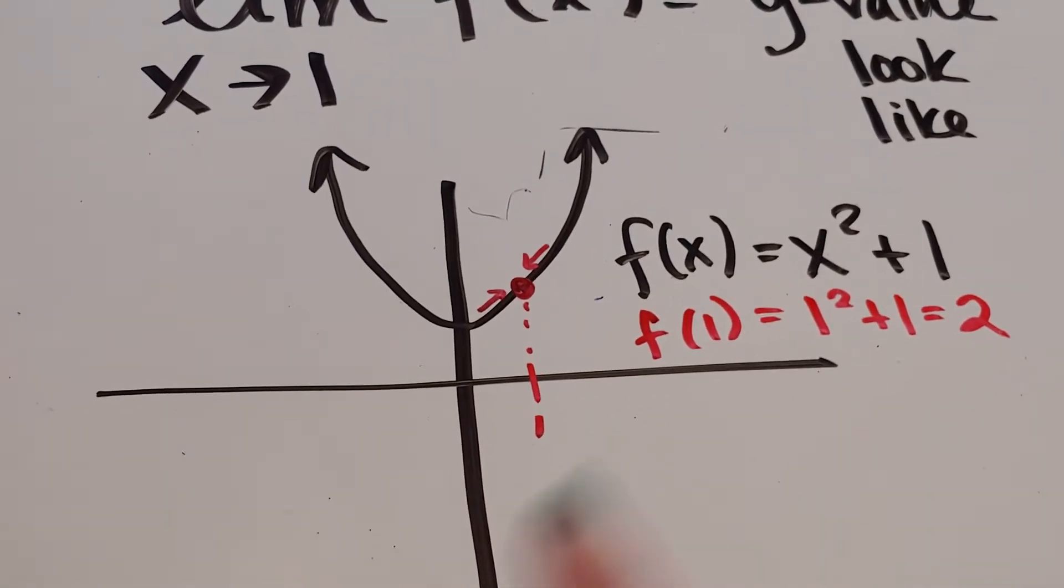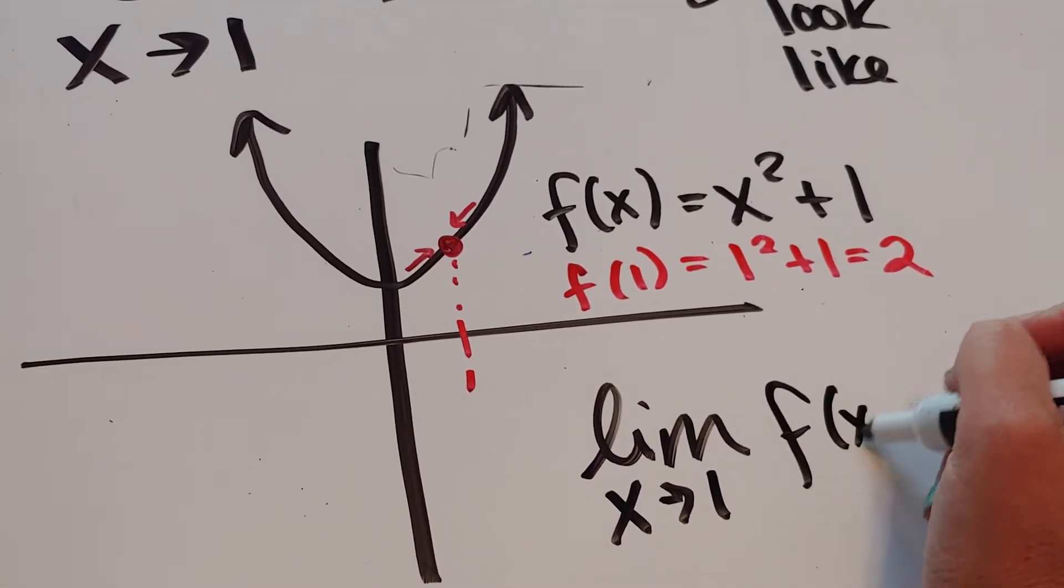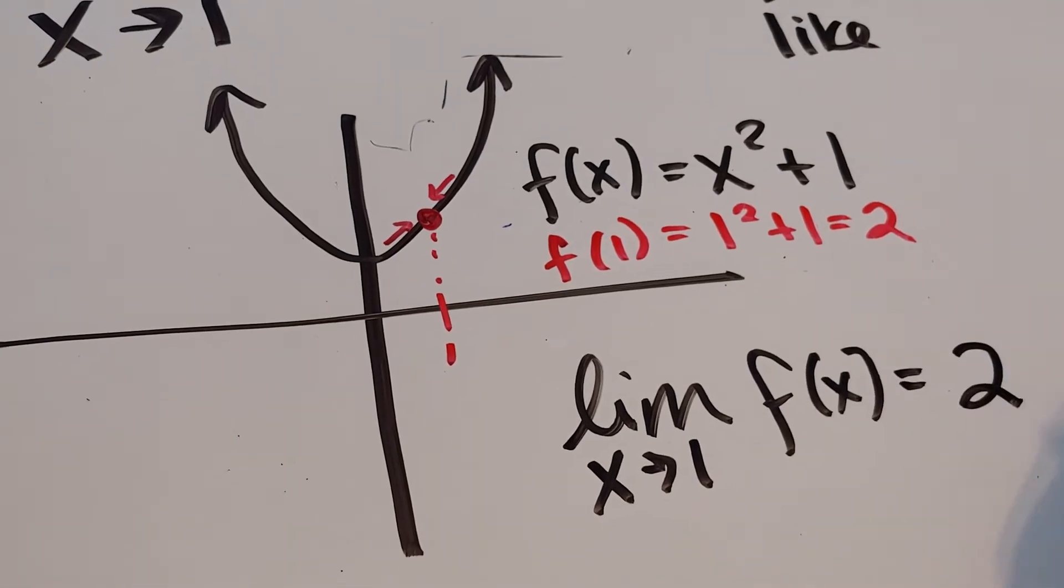Okay. So, in this example, the limit as x approaches 1 of f of x is just the y value there, which is the number 2.